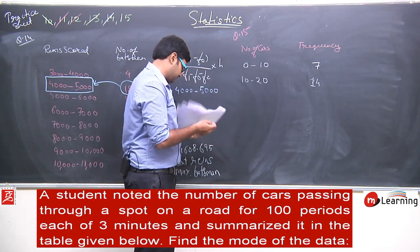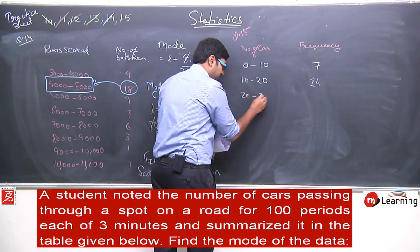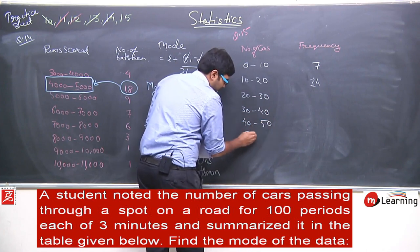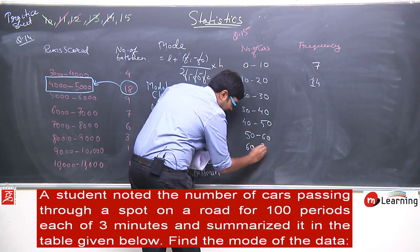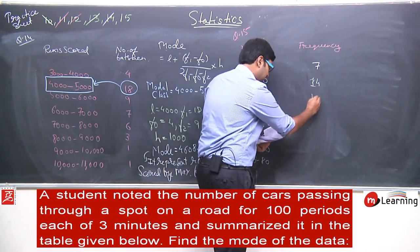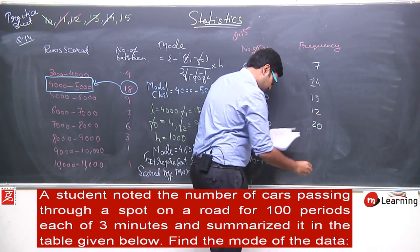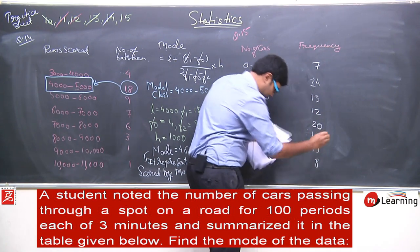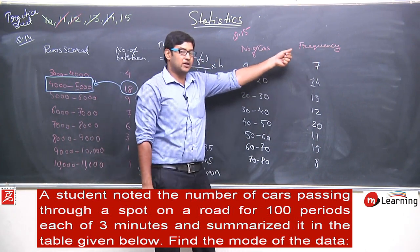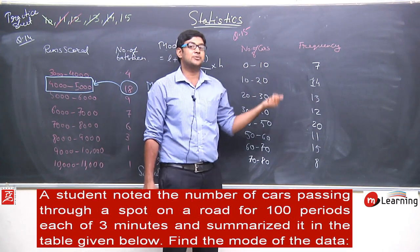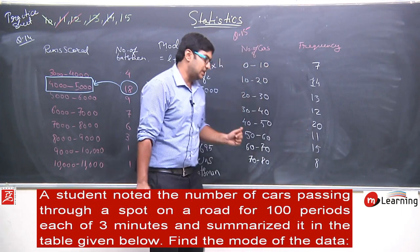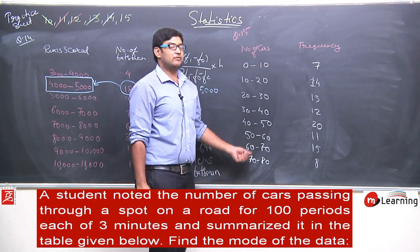The remaining intervals are: 20 to 30, 30 to 40, 40 to 50, 50 to 60, 60 to 70, and 70 to 80, with frequencies 13, 12, 20, 11, 15, and 8. So there are 7 slots where 0 to 10 cars passed and 8 slots where 70 to 80 cars passed.